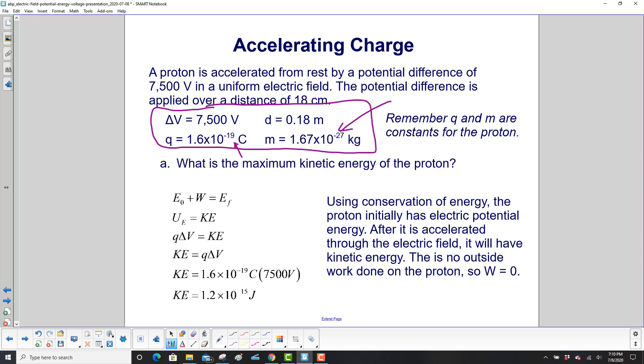Use our work energy equation. Initial energy plus work is equal to final energy. We have the potential energy being converted into kinetic energy. Here's our potential, Q delta V. Here's our kinetic energy. So we have kinetic energy is Q delta V.